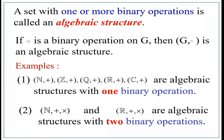So what is a binary operation? A set with one or more binary operations is called an algebraic structure. The notation is an ordered pair G comma circle, or for two operations, an ordered triad N comma plus comma multiplication. This is the definition of algebraic structure.